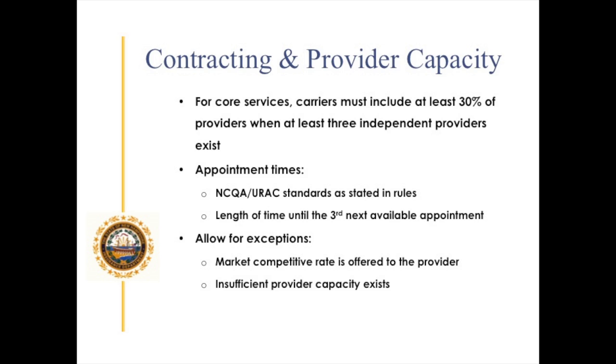We have to allow for exceptions. One area that has played itself out with the network adequacy rules is whether or not a market competitive rate has been offered by the insurance company to the healthcare provider. This has taken place in circumstances where there's been a contract dispute, and the insurance department has played a role in determining whether a competitive rate has been offered. We have access to claims data and several of us have experience in contracting, so we could make determinations about whether a market competitive rate has been offered to the provider. Both parties don't really like to have the insurance department involved, so there is certainly incentive for them to resolve those types of disputes on their own.